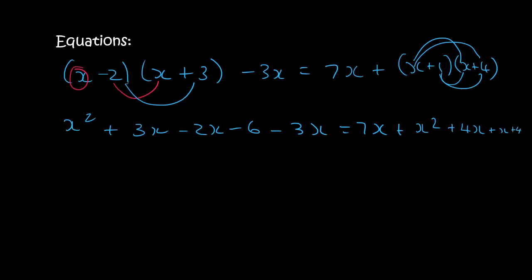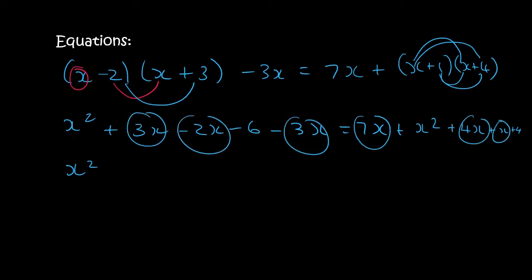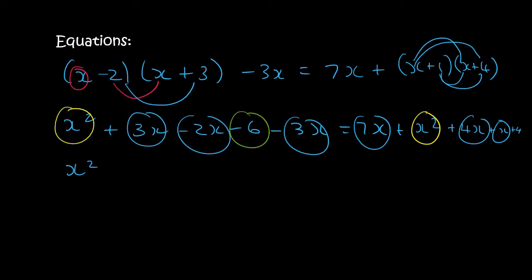Now we can simplify. On the left we have an x squared. Remember, x squared can't be added with 3x because from algebraic expressions, you can only add or subtract like terms. So your like terms are all the x's, x squares together, and numbers together.